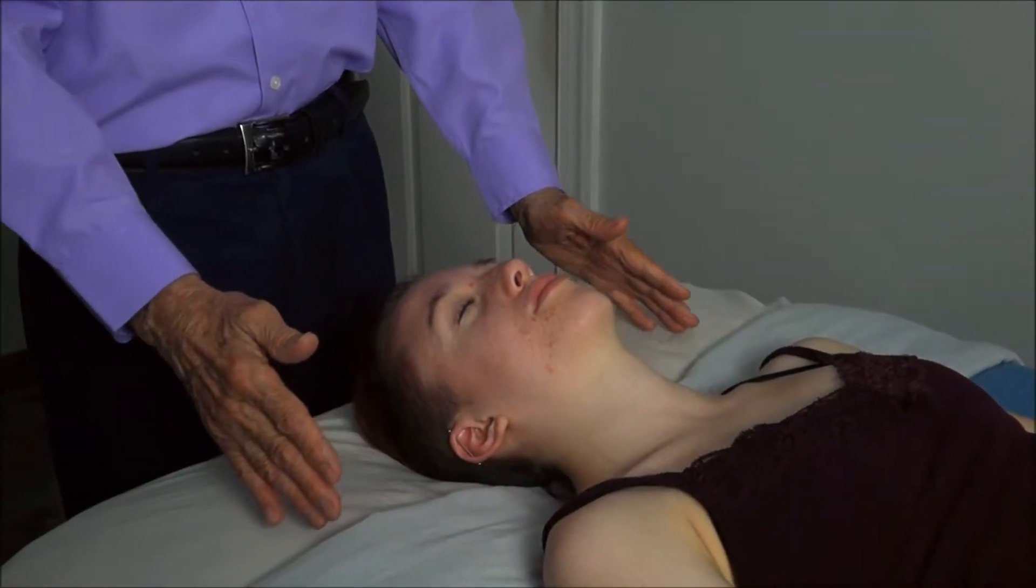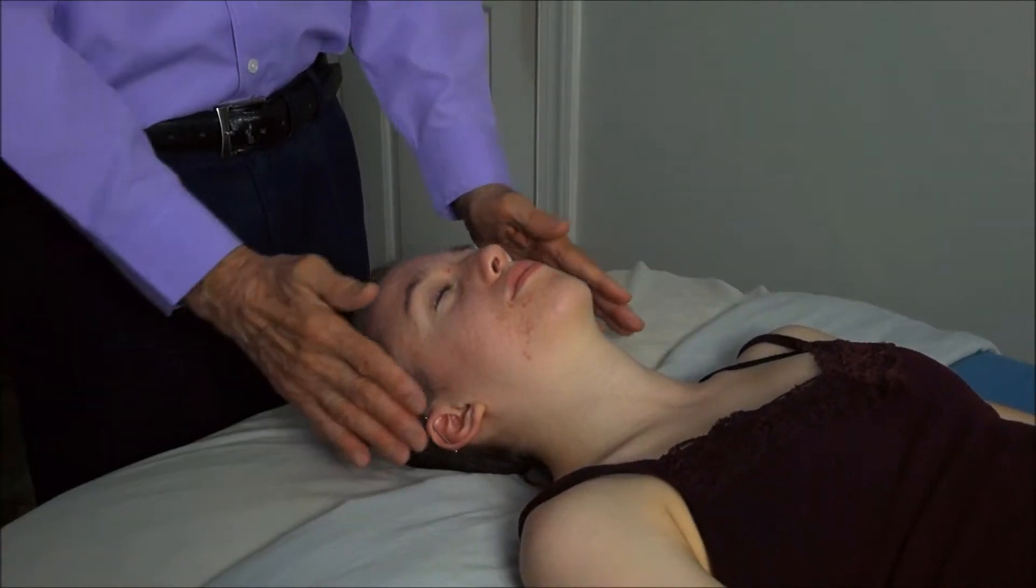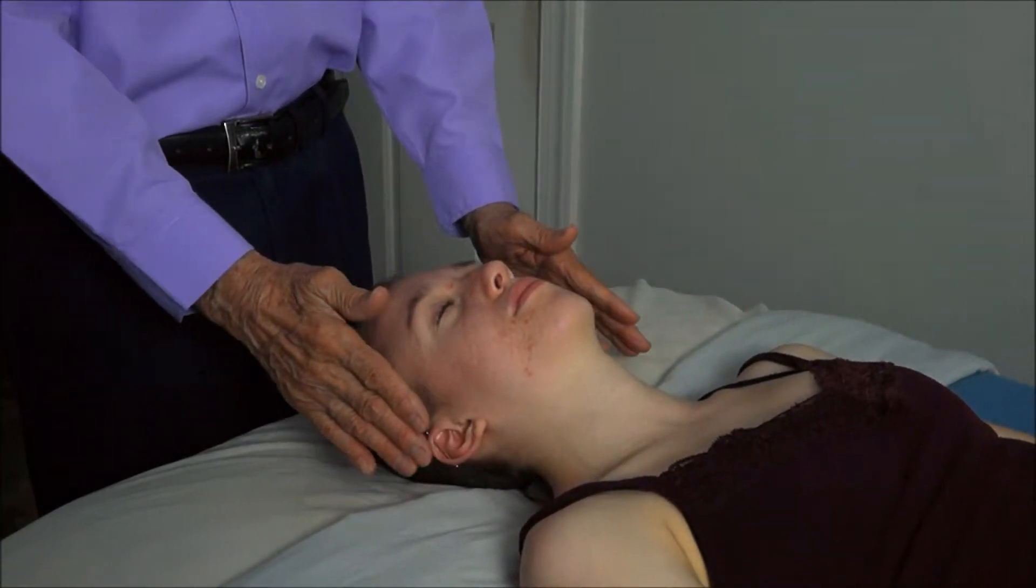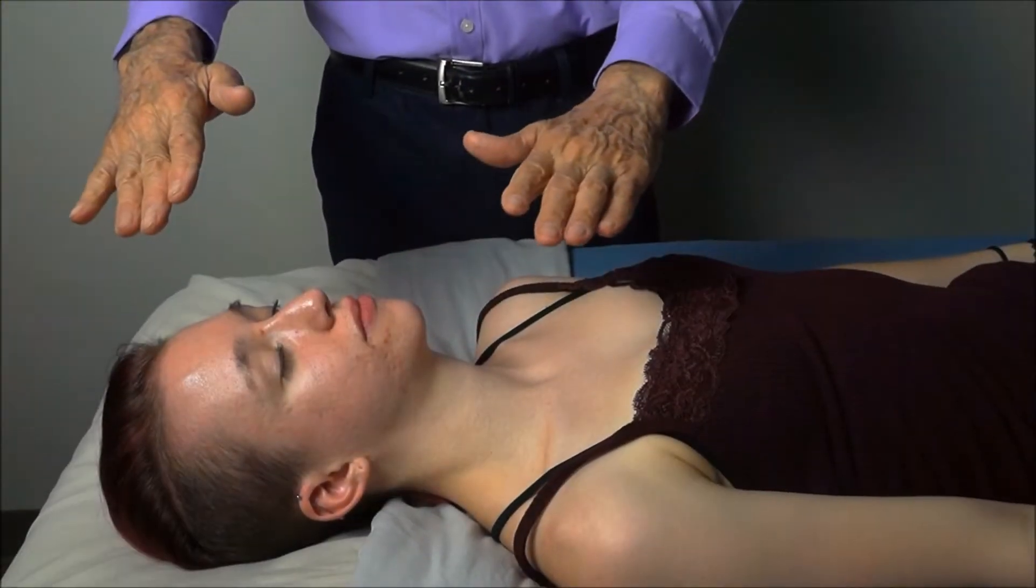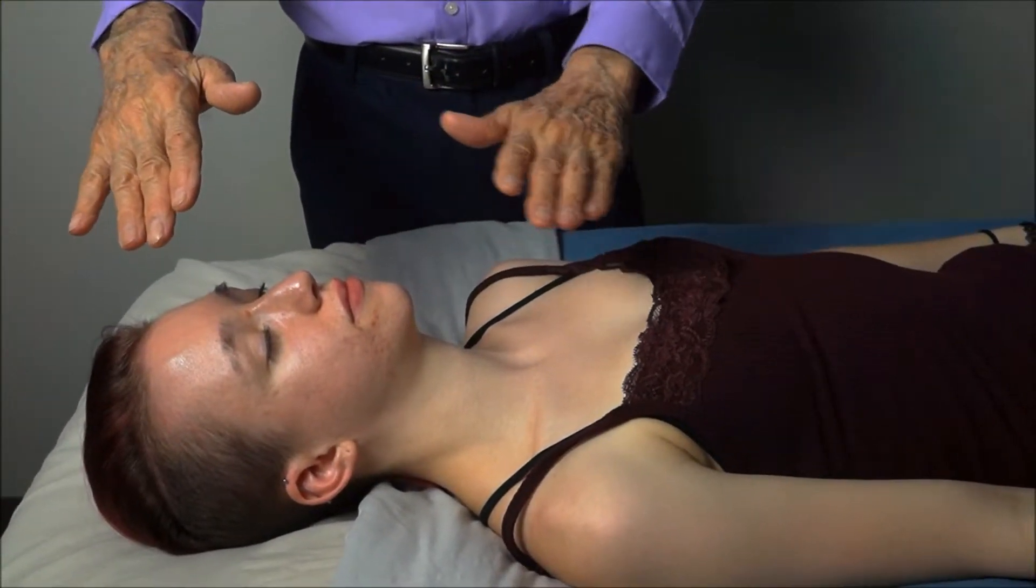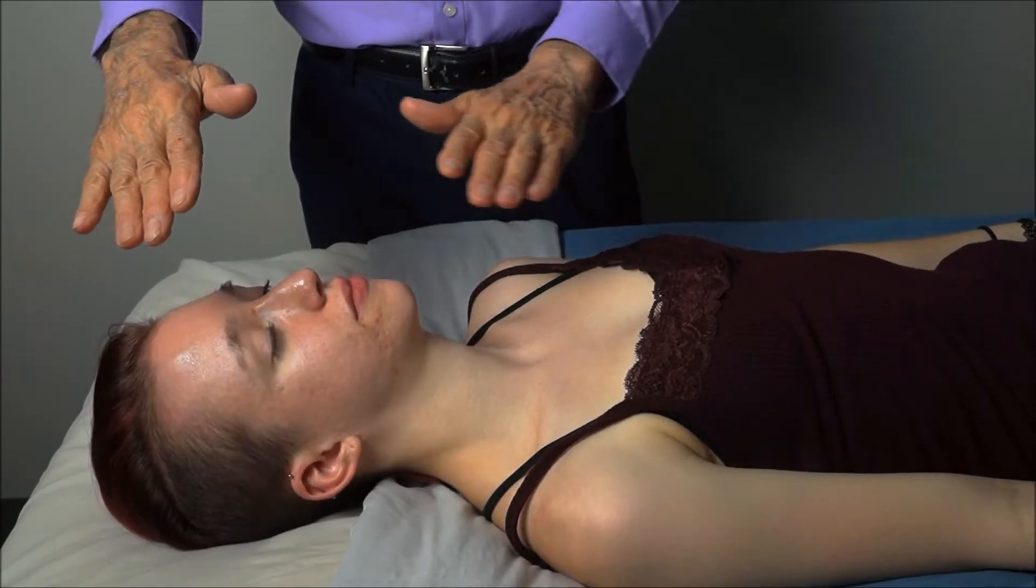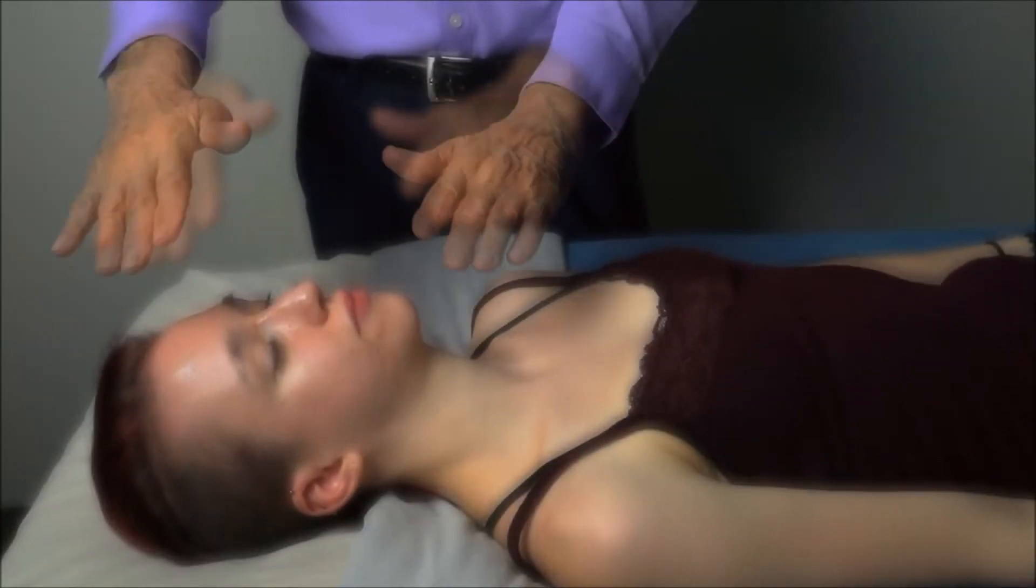Next, you'll lie fully clothed on the table. The practitioner will move their hands above your body, feeling where energy flows and where it is blocked. They'll then manipulate that energy, clearing any blockages so that the energy can flow freely again and the body can heal itself.